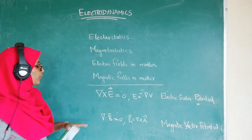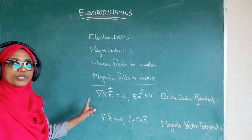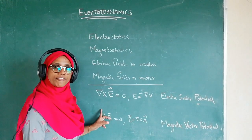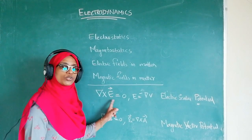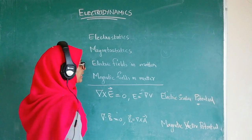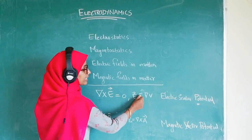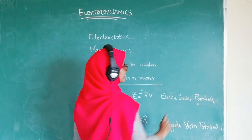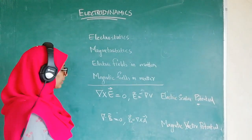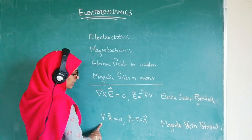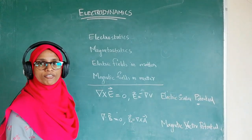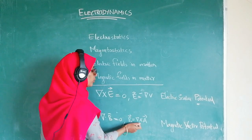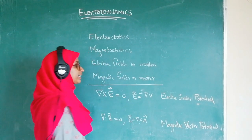I am going to represent electrostatics and magnetostatics using two basic equations. From the static electric field — it is a conservative field — we can represent curl E equals zero. In such a case, the electric field can be represented as the negative gradient of a scalar, known as the electric scalar potential. From magnetostatics, divergence of B equals zero, signifying no magnetic monopoles exist. From this, we can write B equals curl A, where A is the magnetic vector potential.